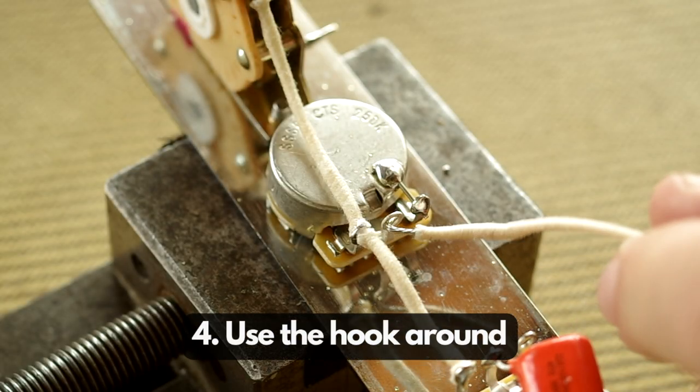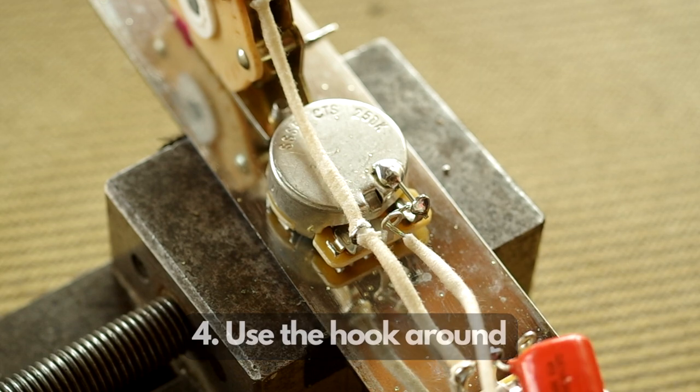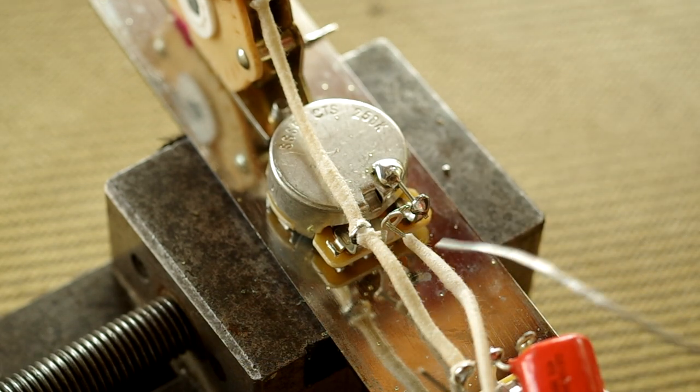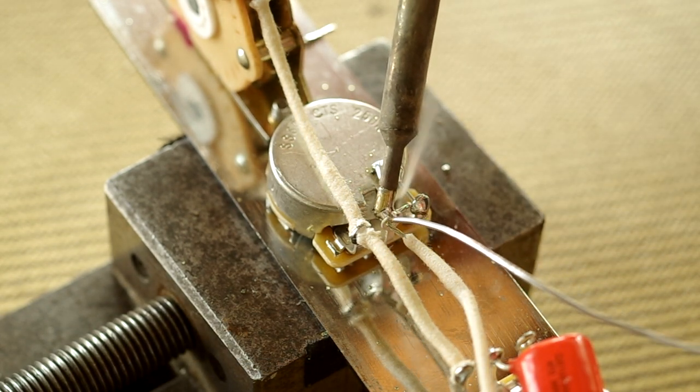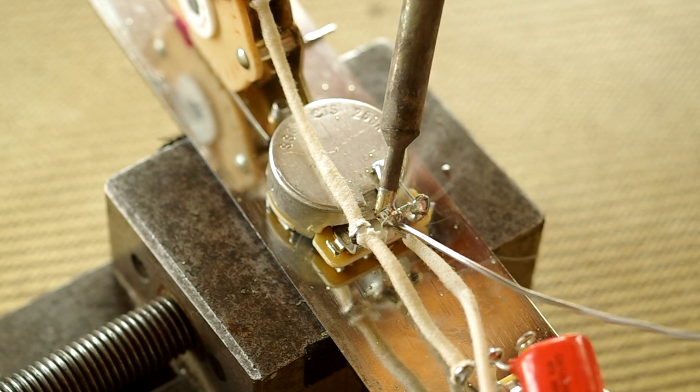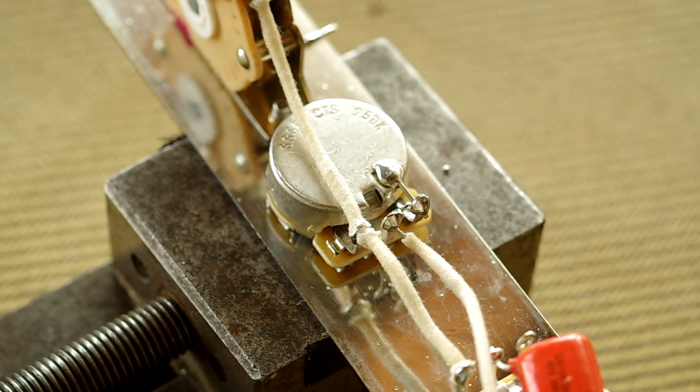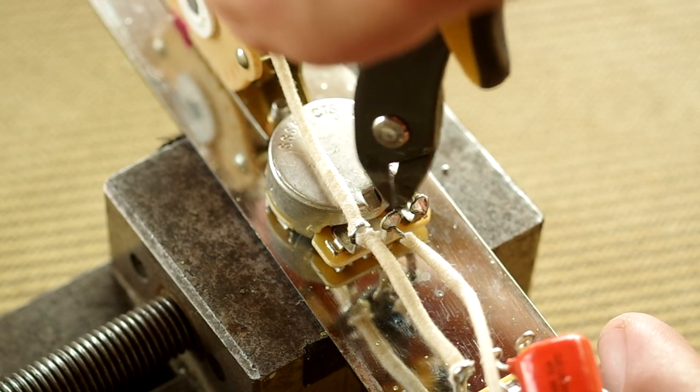My tip number four is to use the hook around. This really helps with the last tip actually. You can see me here using a wire and I'm soldering to the lug of a pot. Just by putting a little hook on the end of the wire, it'll stop any movement, and then you can snip off the excess wire later.